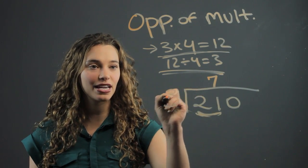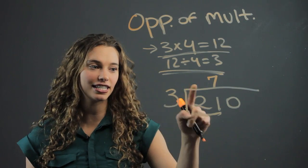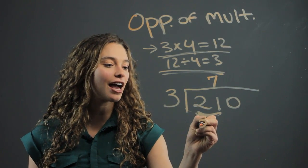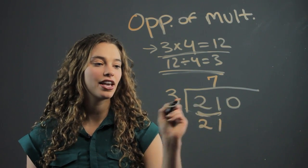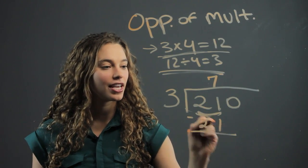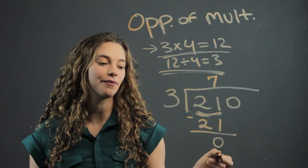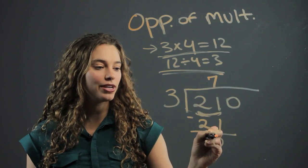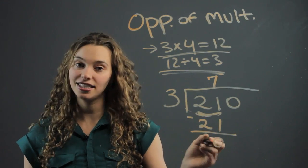We multiply three times seven, just as we did to get twenty-one, and we write that right below the twenty-one. Then we subtract twenty-one minus twenty-one, and that's going to give us zero. So you always write the number that remains. In this case, it's zero.